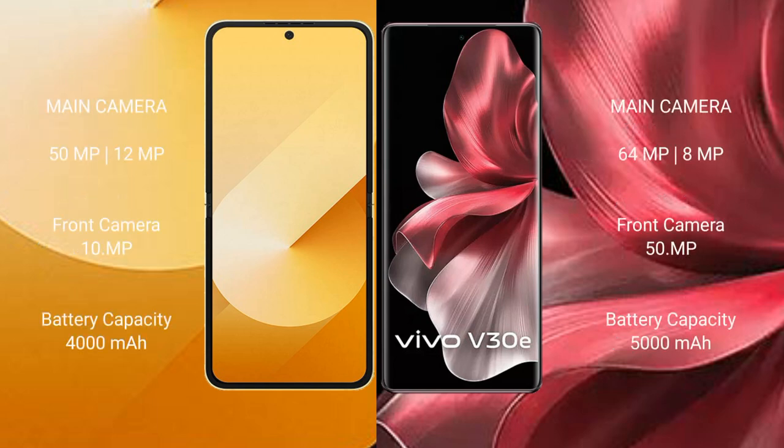Samsung Galaxy Z Flip 6 features a dual camera setup: 50MP main plus 12MP ultrawide, and a 10MP front camera. VOV29E features a dual camera setup: 64MP main plus 8MP ultrawide, and a 50MP front camera.